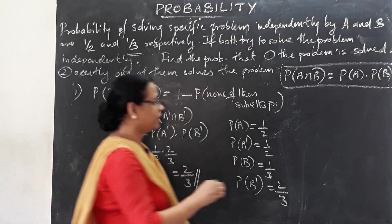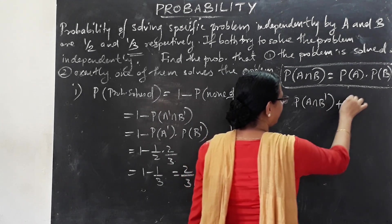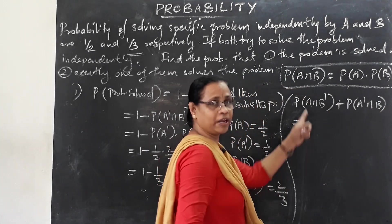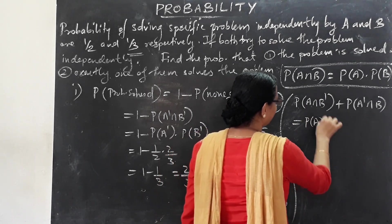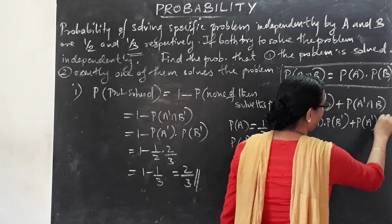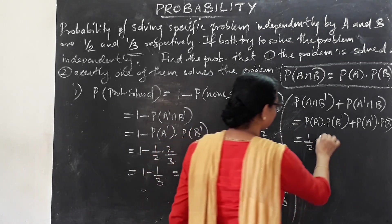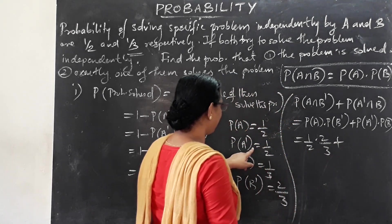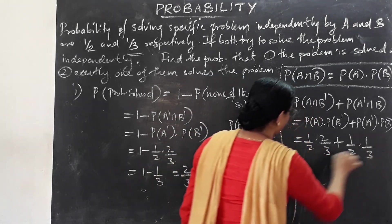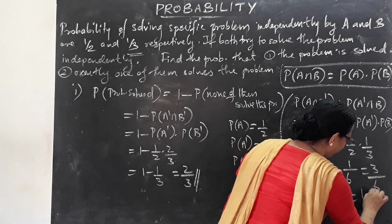For exactly one to solve the problem: either A solves it and B does not, or A does not solve it and B does. The formula is: probability of A into probability of B' plus probability of A' into probability of B. That is: (1/2)(2/3) plus (1/2)(1/3), which equals 2/6 plus 1/6, which equals 3/6.